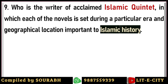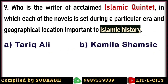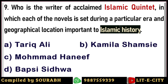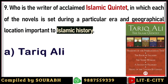Next question: who is the writer of the acclaimed Islamic Quintet — five novels each set during a particular era and geographical location important to Islamic history, covering the evolution of Islam from its beginning to the present? Options are Tariq Ali, Kamila Shamsie, Mohammed Hanif, and Bapsi Sidhwa. The correct answer is Tariq Ali. The five novels are: Shadows of the Pomegranate Tree, The Book of Saladin, The Stone Woman, A Sultan in Palermo, and The Knight of the Golden Butterfly.